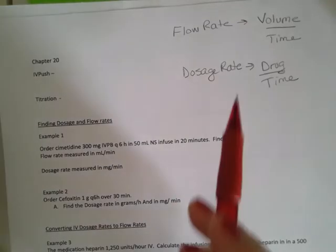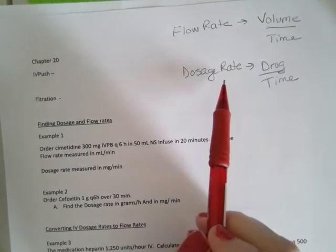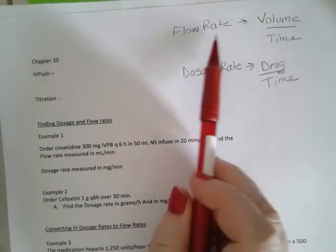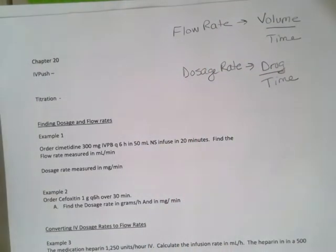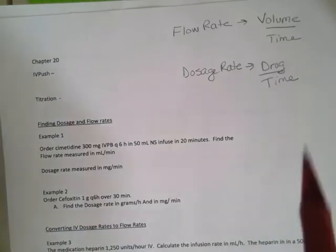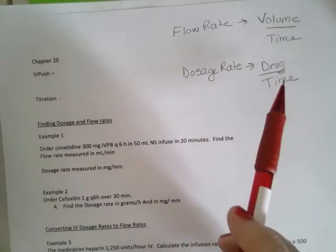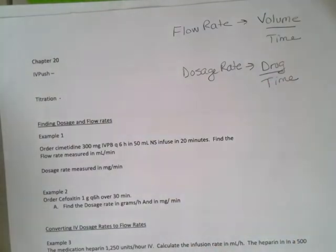So we're going to start with our flow rate and our dosage rate. The flow rate is the volume over time and basically it's asking how fast is that IV running into the patient, whereas the dosage rate is your drug over time. Kind of like saying two Tylenols every six hours.